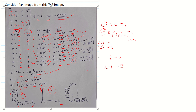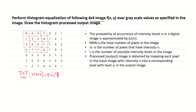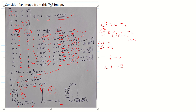Since the processed image is obtained by mapping each pixel with intensity RK to level SK, we handle the repeated SK values. For the two inputs mapping to SK = 4, their NK values are 3 and 1 respectively. We add these: 3 + 1 = 4. Similarly for SK = 6 and SK = 7, we add their corresponding NK values.